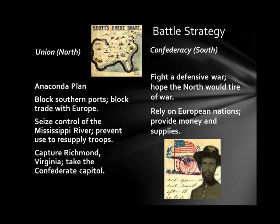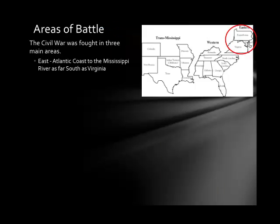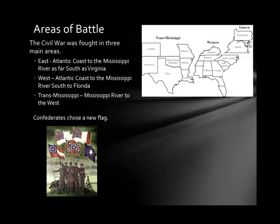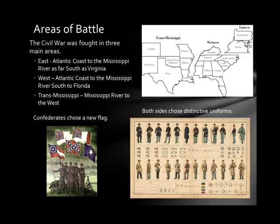The Civil War was fought in three main areas: the East, the West, and the Trans-Mississippi. At the beginning of the war, the Confederates chose a new flag — the Confederate flag we commonly recognize was actually the battle flag carried throughout the war, not the official flag of the Confederate States of America. Both sides also chose distinctive uniforms: the official Union uniform was blue, and the official Confederate uniform was a gray jacket with bluish-gray pants. That covers the basic information on advantages, disadvantages, and battle strategies of the North and South at the beginning of the Civil War.